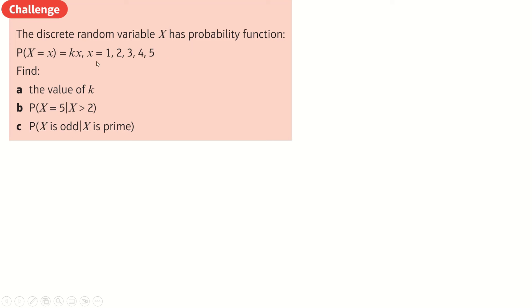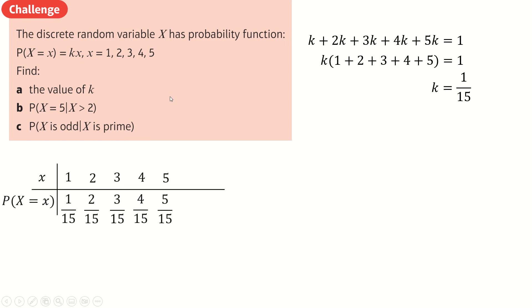Okay, this one here. So we have the probability of X being 1 is K. And then the probability of X being 2 is 2K and 3K and 4K and 5K. All of those probabilities must add up to 1. So factorize out the K. Divide. And you get K is this. And so then we can maybe draw a table. It looks like this.